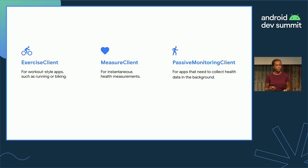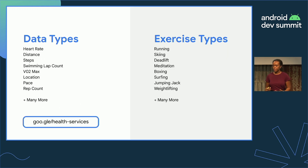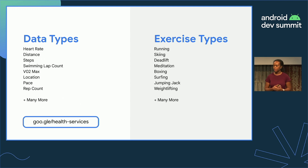One of the major development benefits over alternative APIs is that with HealthServices, you write your app only once, and the API adapts it to differences in watch hardware. Here is a list of just a few of the data and exercise types that HealthServices supports — and this list is not exhaustive at all, so I encourage you to check out the documentation after the talk. Data types include heart rate, distance, and swimming lap count; exercise types include skiing, deadlift, meditation, and boxing. Now that we've looked at some of the data and exercise types available, let's look at an example of how you would use HealthServices to record a running workout along with associated metrics: distance, heart rate, and total calories.